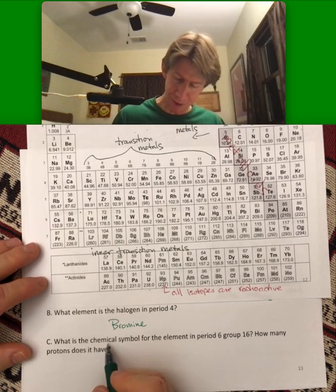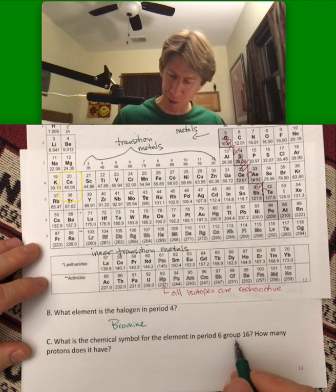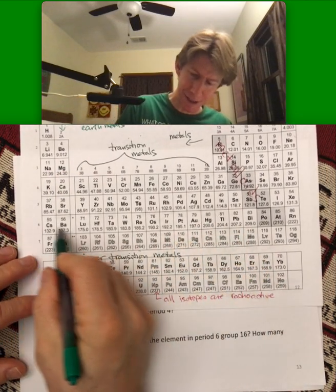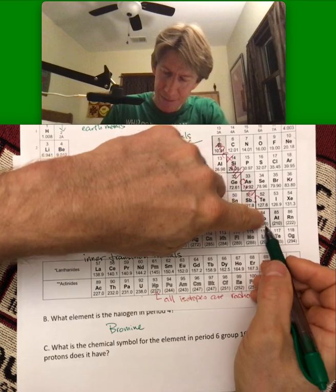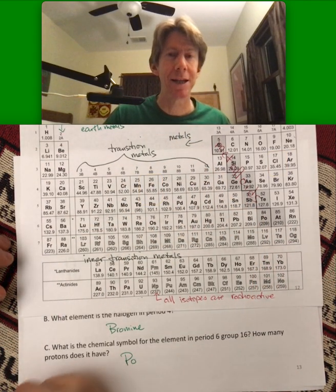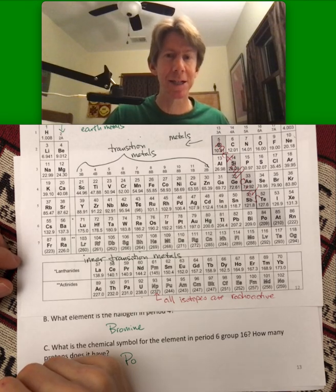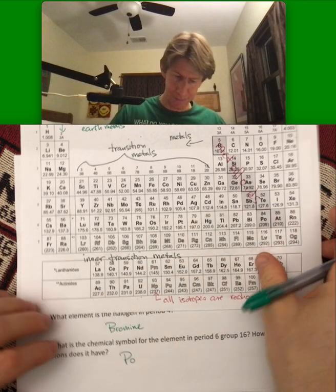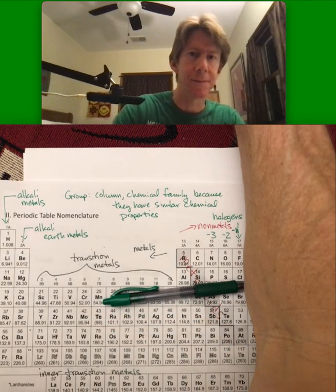And what is the chemical symbol for the element in period six, group 16? Good, that's on the screen. Period six, 16. That's P-O. That's a P. And I don't think that's one you have to memorize, but that's polonium.